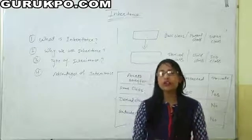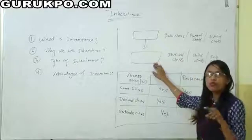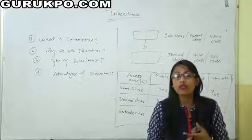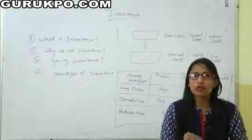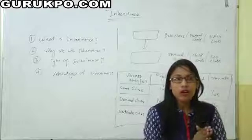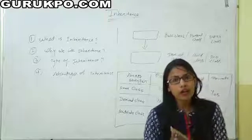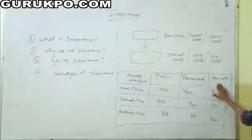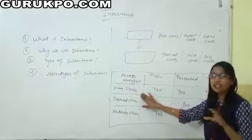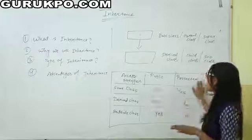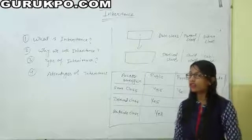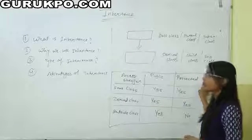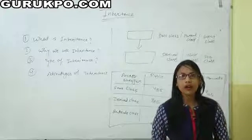In inheritance, one derived class can inherit from more than one base class using access specifier modes. Access specifiers provide the visibility of data members and functions throughout the program. In OOP, we use three types of access specifiers: public, protected, and private. In the case of inheritance, only two types — public and protected — are used, because private members are not inherited by other classes.